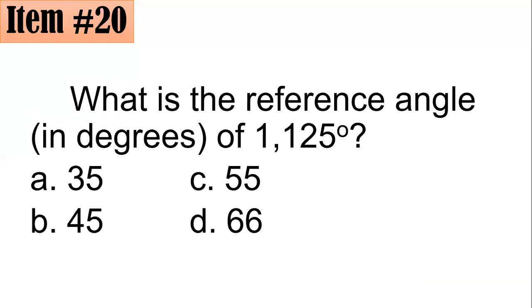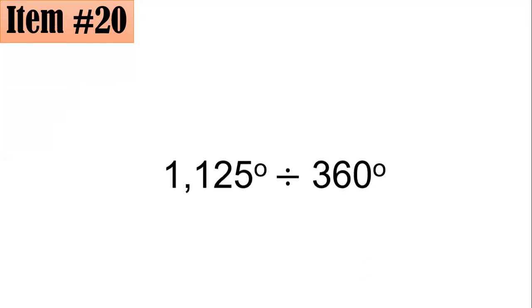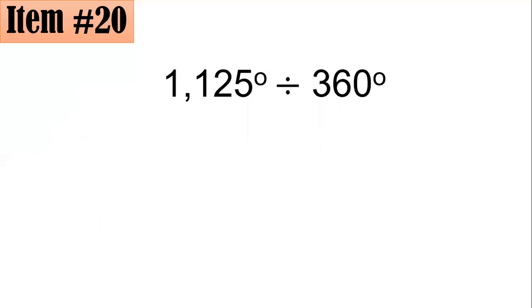Number 20, what is the reference angle in degrees of 1,125 degrees? Did you go for 35, 45, 55, or 66? From this one, when we speak about reference angle, it is the smallest positive acute angle that is formed by an angle of which one of its sides is the X-axis. So in this case, since 1,125 degrees is way higher than a revolution, which is 360 degrees, it's important to determine first the number of revolutions.